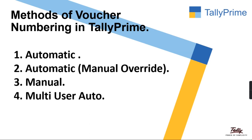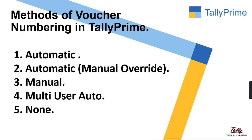The fourth method of voucher numbering is multi-user auto. Where you are using a multi-user environment, the voucher number has to be set — you can keep it as multi-user auto. And the fifth method is none.